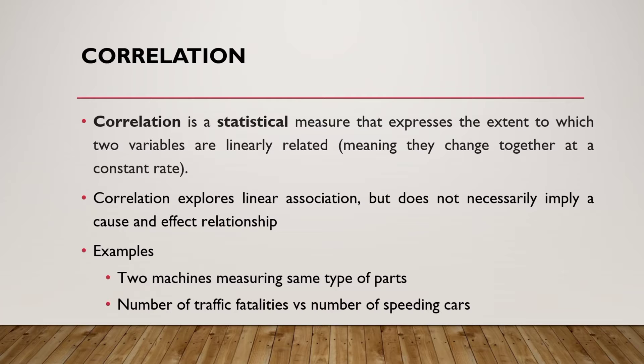For example: two machines measuring the same type of parts, or the number of traffic fatalities versus the number of speeding cars. Scatter diagrams and correlation can be used with different kinds of parameters to determine the relationship between two variables — these are just some examples.